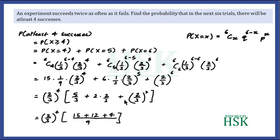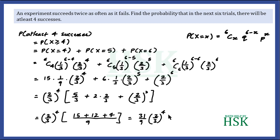Adding all three fractions with LCM = 9 gives 15 + 12 + 4 = 31. So the result is 31/9 × (2/3)^4, which is the required answer. This is how the question is solved.